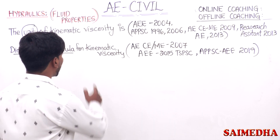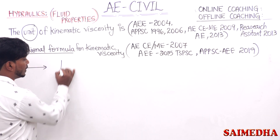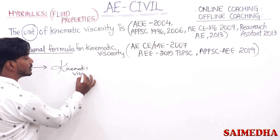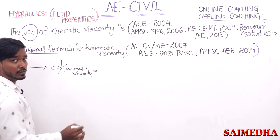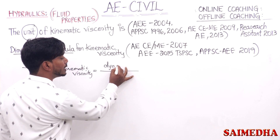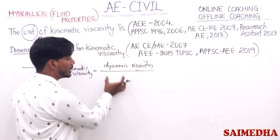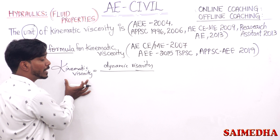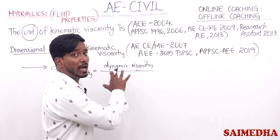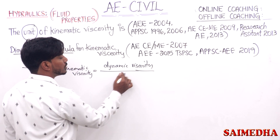Now let's talk about the kinematic viscosity concept. First, let's talk about the kinematic viscosity formula. We know that kinematic viscosity is a generalized formula. Kinematic viscosity is without force, and dynamic viscosity is with force. Dynamic is with concentration of force; kinematic is without concentration of force. So kinematic viscosity equals dynamic viscosity divided by mass density.